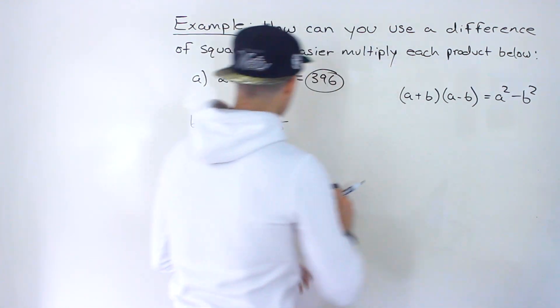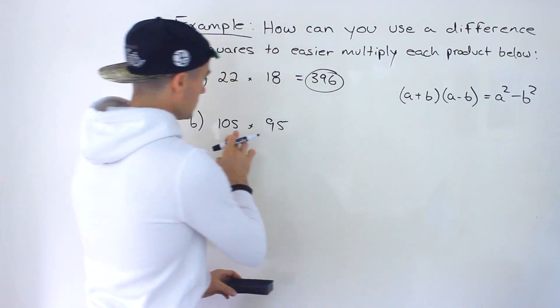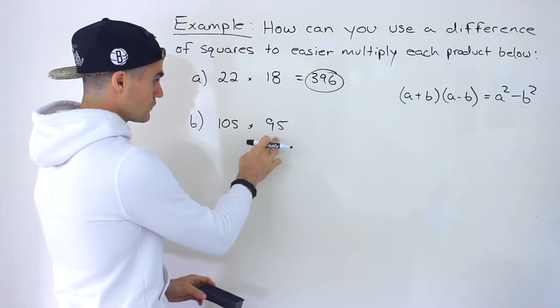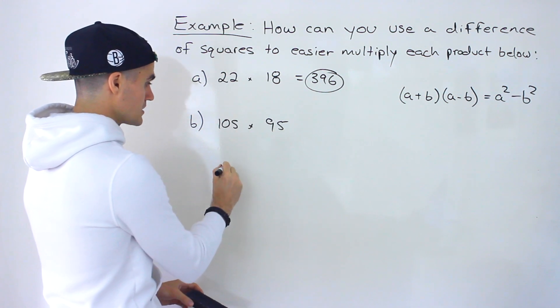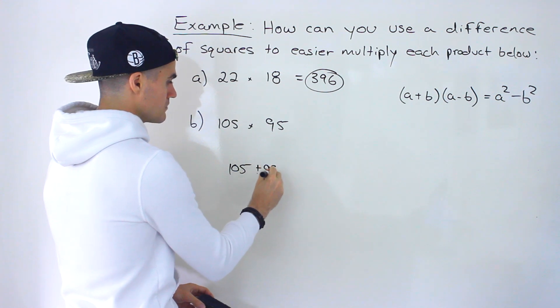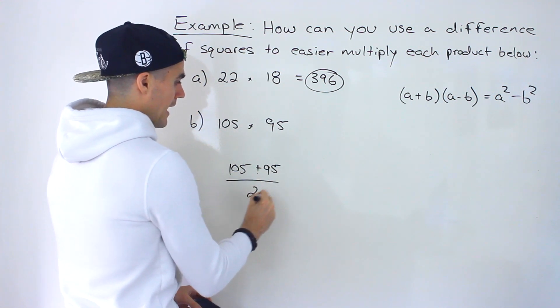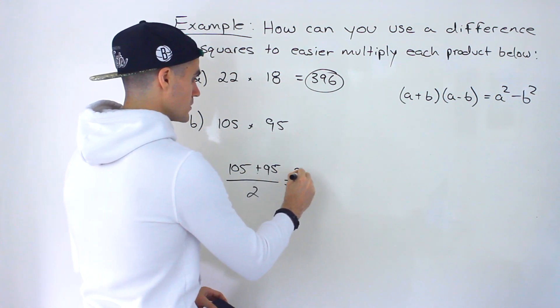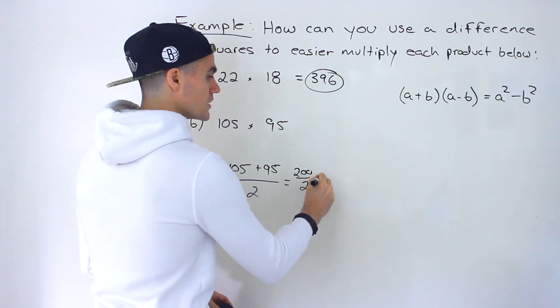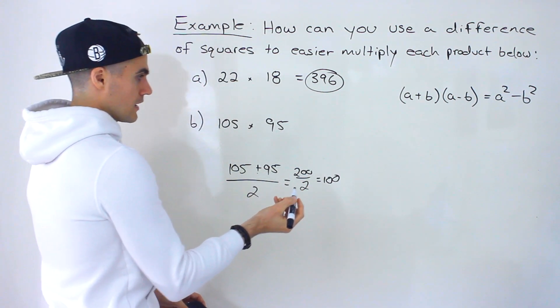So following that same process here what's the midpoint between 105 and 95? Well it's a hundred but if these were bigger numbers for example you could find the midpoint by adding them divided by two. So that'd be 200 divided by two which would give us 100.